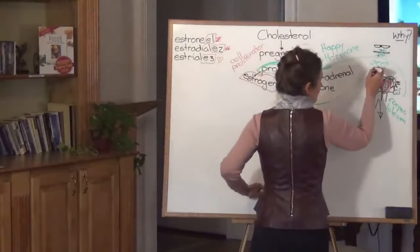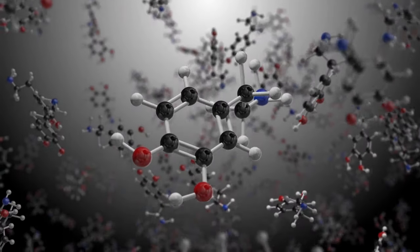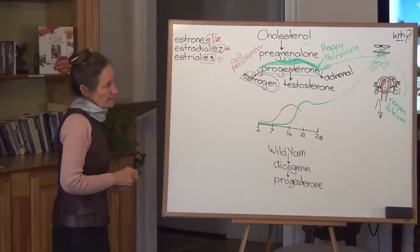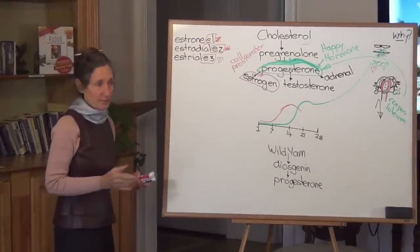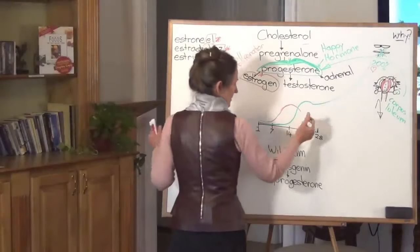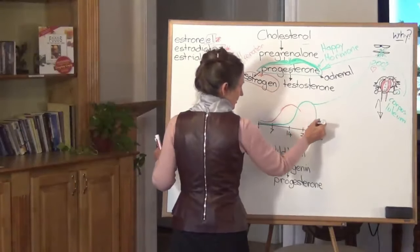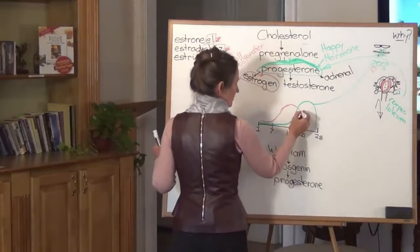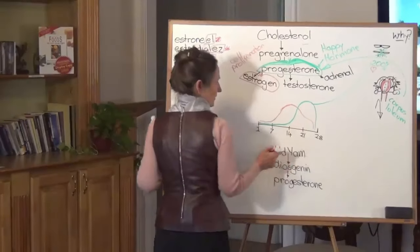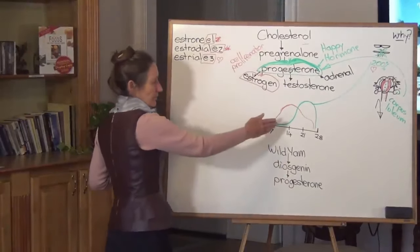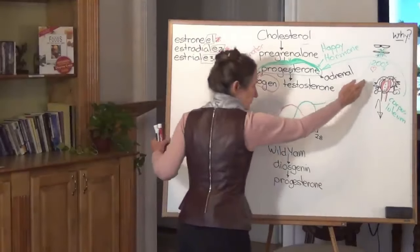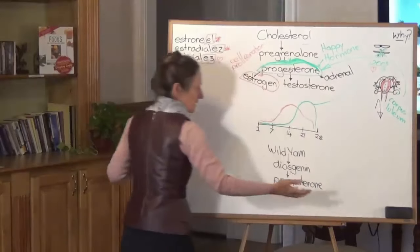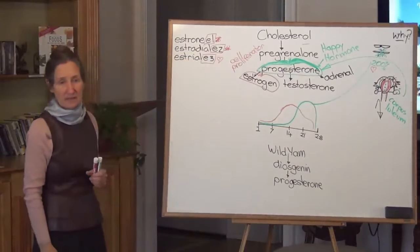In pregnancy, it is estriol levels that rise with the progesterone. But if there was no conception, by day 26, progesterone is given the message to go backstage, to drop down. And by day 26, estrogen is also given the message to drop. Now when both of those levels drop, the blood supply to the uterus is cut. And when the blood supply to the uterus is cut, then the blood nest comes away. And we are once again, day one of the monthly cycle.